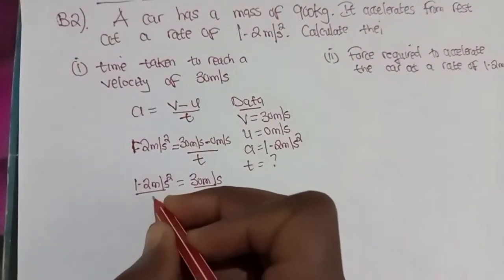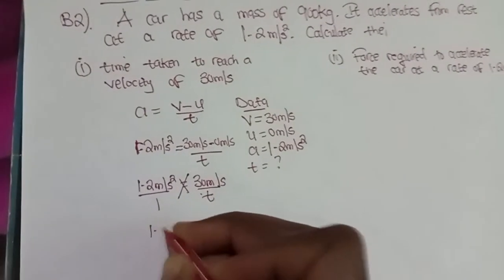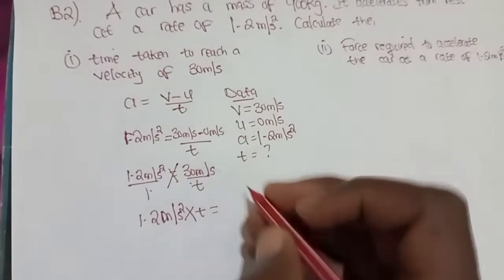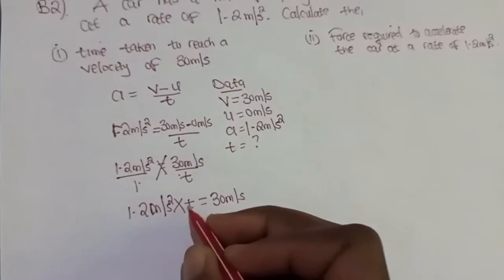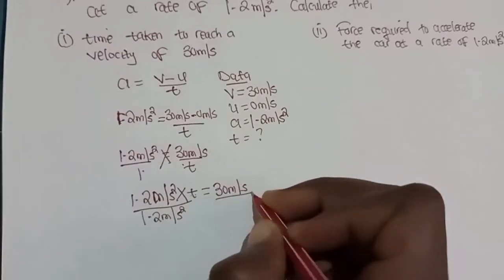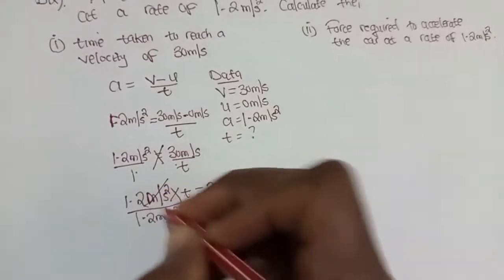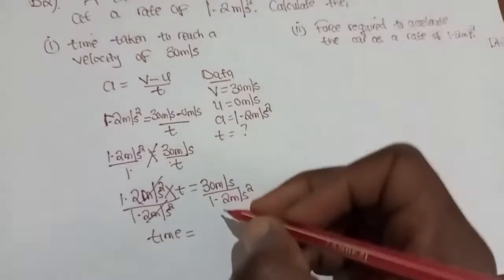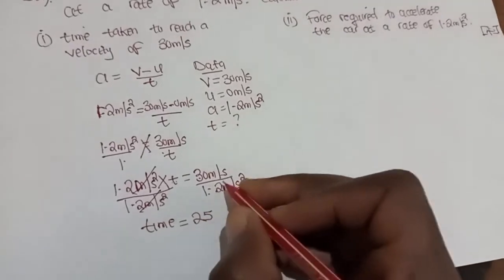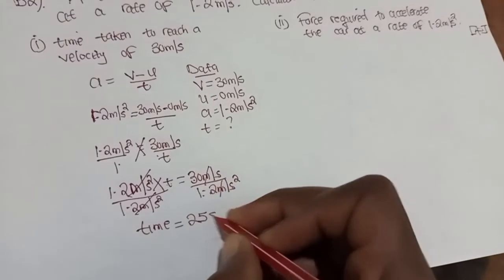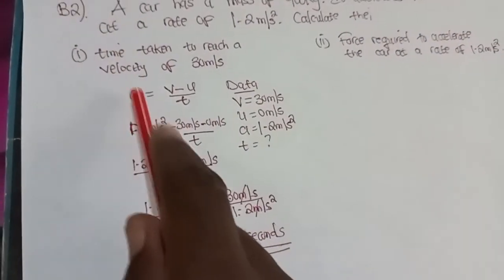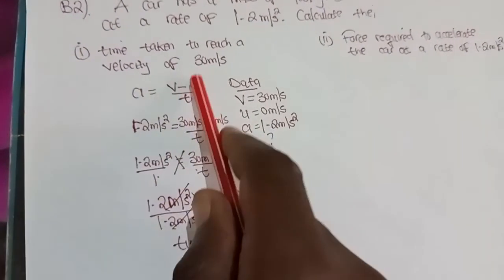At this stage, we're going to cross multiply — put 1 under 1.2 so we can cross multiply. 1.2 m per second squared multiplied by t equals 1 times 30 m per second. Our interest is to find t, so we divide both sides by 1.2 m per second squared. This and that cancel. So 30 divided by 1.2 gives us 25. The meters and seconds cancel appropriately, leaving us with 25 seconds. This is our correct answer.